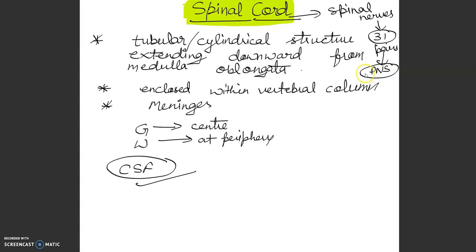This is the gray matter. It is H-shaped, butterfly-shaped mass which consists of intermediate neurons and cell bodies structure. This is gray matter.